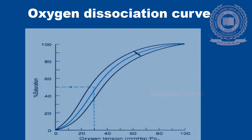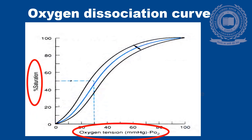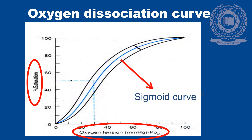The oxygen dissociation curve is a curve on which the x-axis is oxygen tension in the form of partial pressure of oxygen, and the y-axis is the percent saturation of hemoglobin. When the oxygen dissociation curve of hemoglobin is observed, a sigmoid-shaped curve is seen. The dotted line in the graph represents the p50 value, which is the partial pressure at which hemoglobin is 50% saturated.